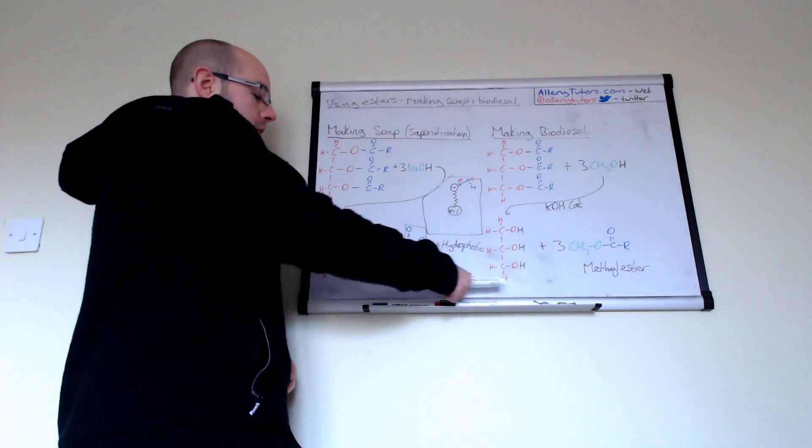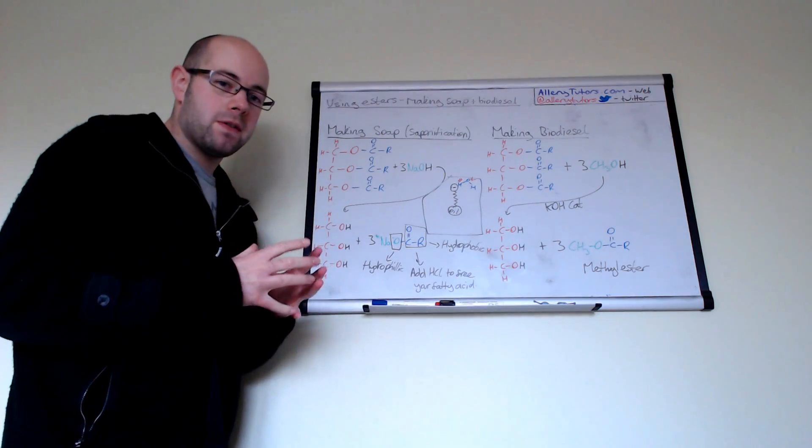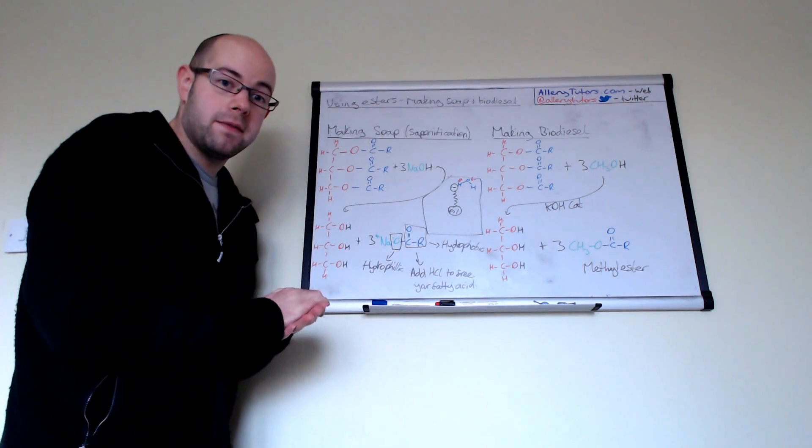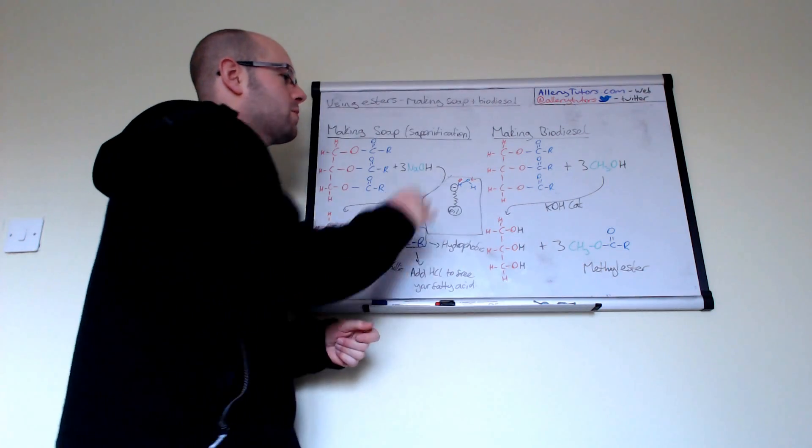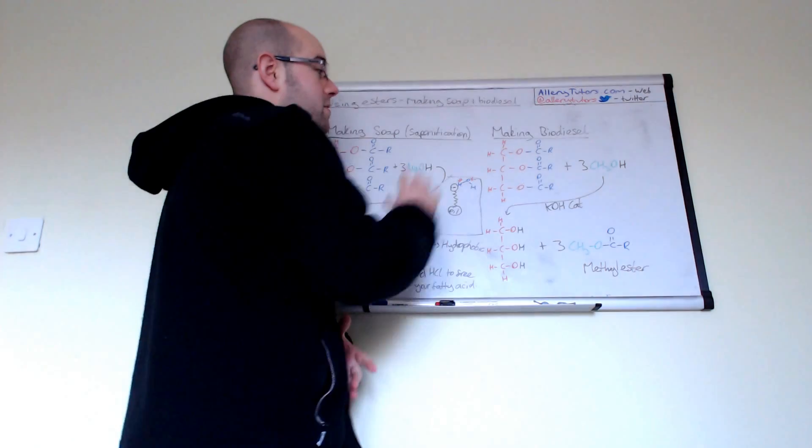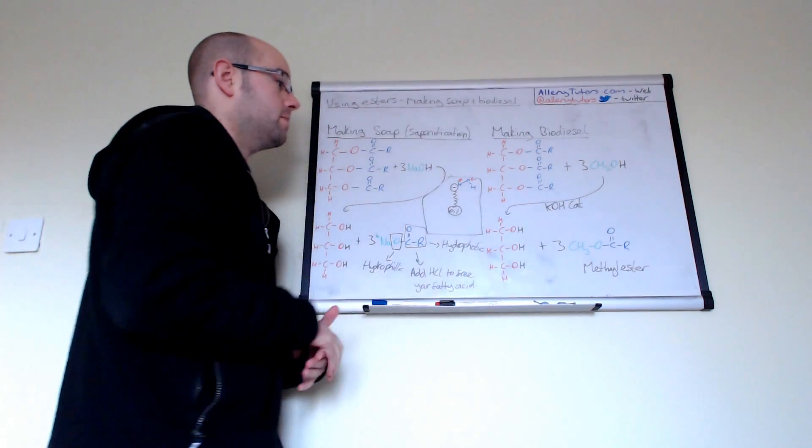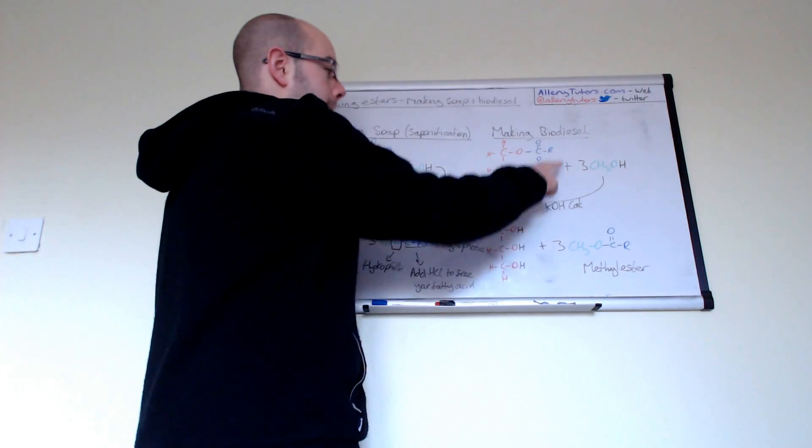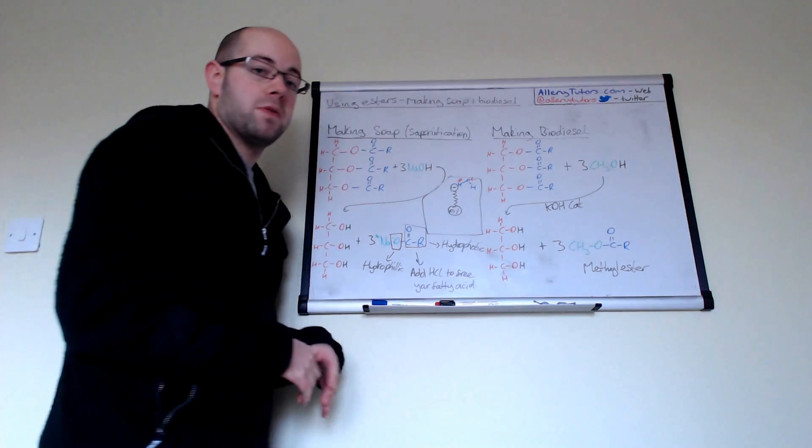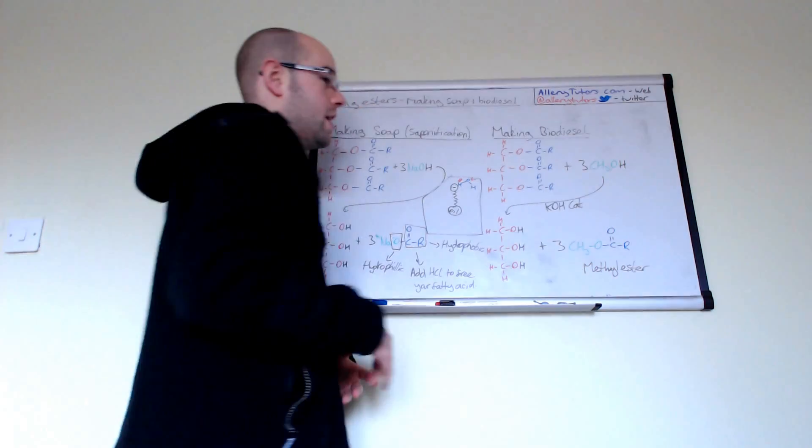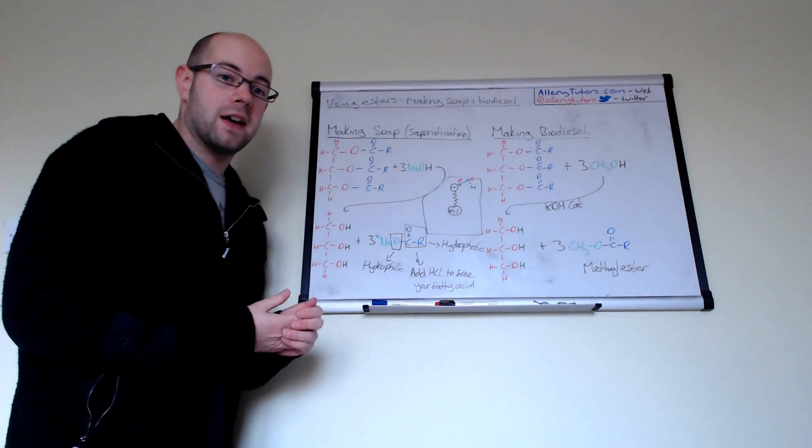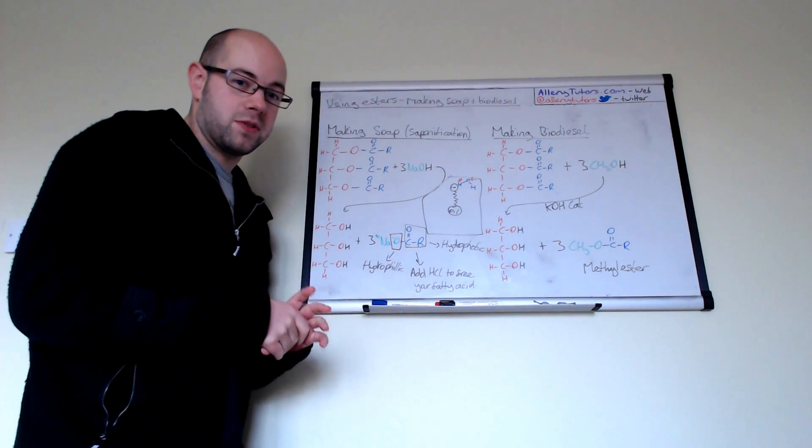Now for biodiesel - a very similar reaction. The soap one is mainly for AQA and Edexcel, while biodiesel is for OCR, Edexcel, and AQA as well. Biodiesel uses the same triester, but instead of reacting with sodium hydroxide, we react it with methanol. We gently distill it with a potassium hydroxide catalyst. By gently, I mean no naked flame since the products are very flammable - use an ice mantle or hot water bath instead.